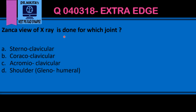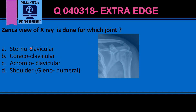The Zanka view X-ray is done for which joint? We have various joints around the shoulder, and if we are given an X-ray image we should know how to identify them. This is the humerus, this is the glenoid — so this becomes the shoulder joint or the glenohumeral joint. This process of the scapula is the acromion process, and it articulates with the clavicle, so this becomes the acromioclavicular joint.